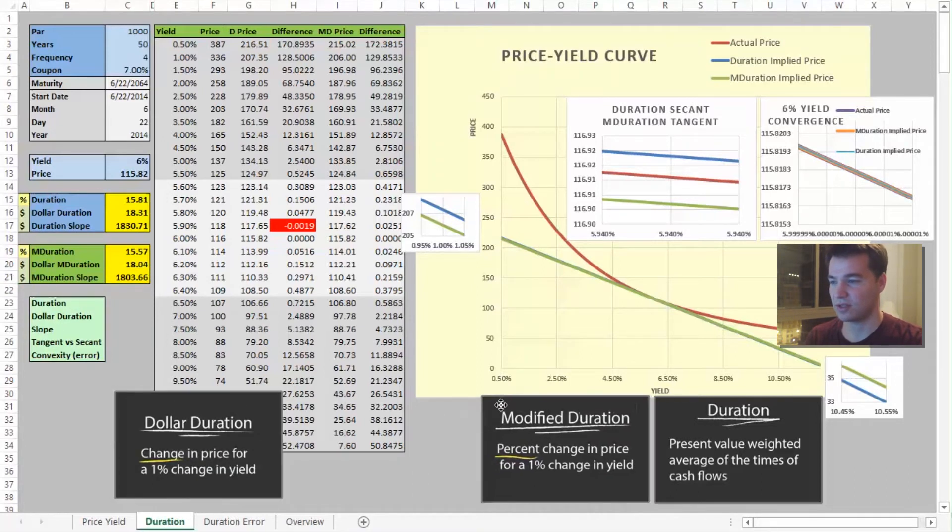Another thing you should know is dollar duration, which is the change in price for a 1 percent change in yield. And that tells us, we move this 1 percent, our price changes how much? That's what we want to know, our rise over our run. So that would be the same as the slope of this line, except this slope is for a rise. It gives us a rise of 18.03 over a run of 1.